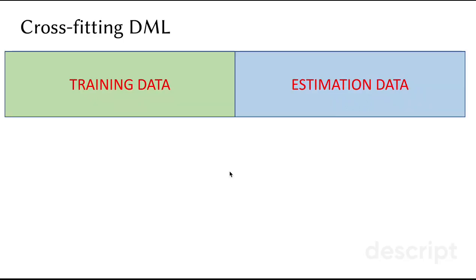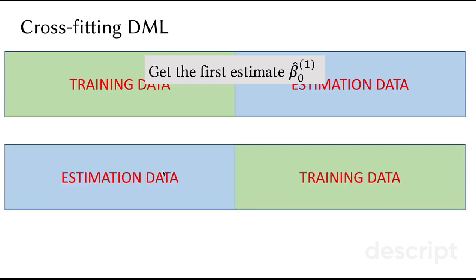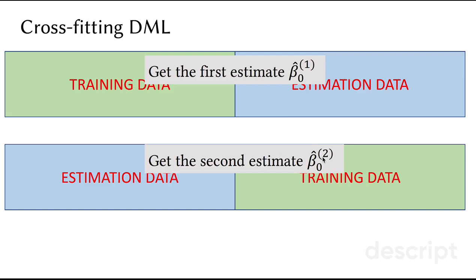And here comes the idea of cross-fitting. If we split our data into half, making a training data and estimation data, we get our first estimate of beta hat 1, and then we switch the rows and we use the second half to train data and the first part to estimate our second estimator.